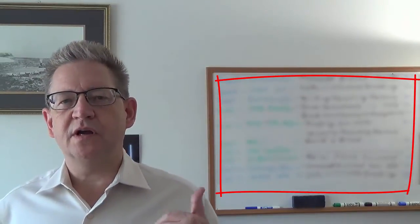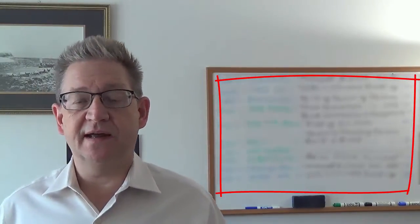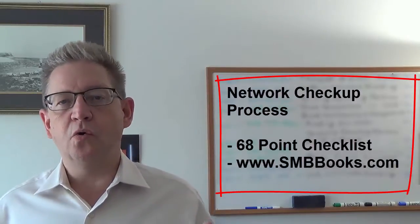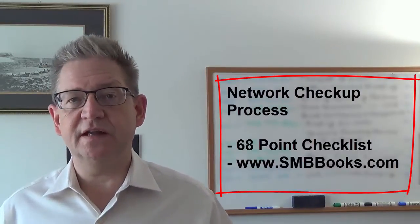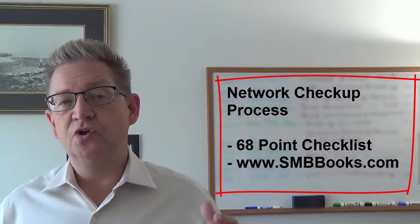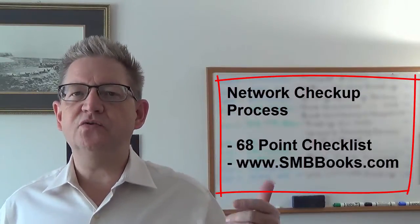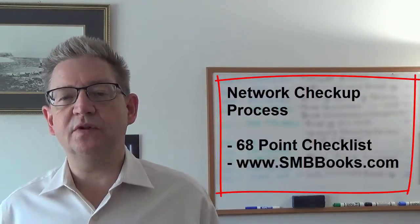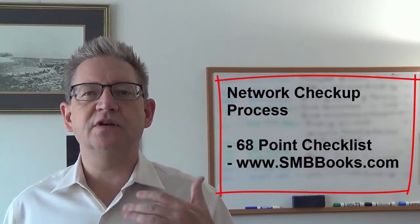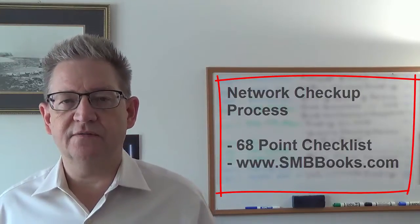The network checkup process starts with something like a 68-point checklist that you can get at smbbooks.com, or you might have some other checklist or roadmap system you've used in the past. You can use the cloud readiness checklist if you're looking at cloud stuff. Basically you start with something that gives you a list of everything going on in their system — on the server, on the network — so that you have a place to start the conversation.